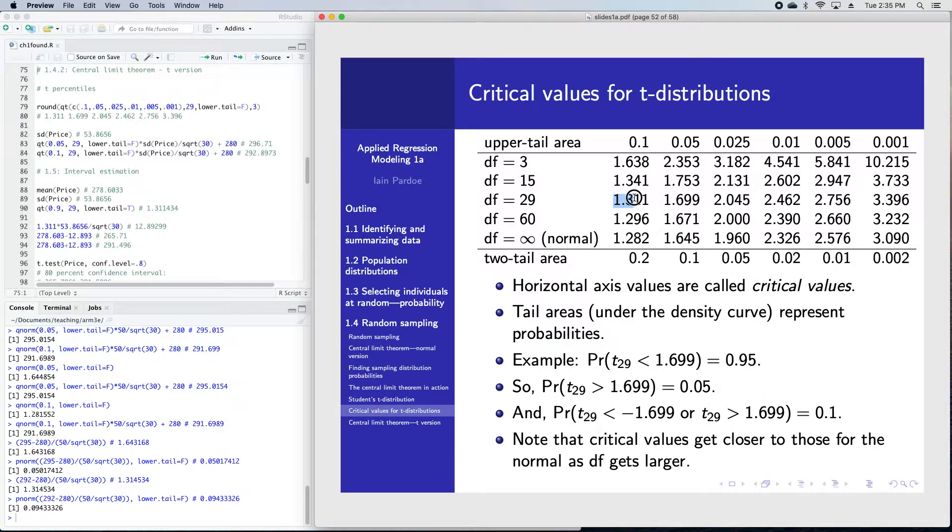So this 1.311 here, that's the value along the horizontal axis. If we were to draw a picture of a t-curve, we would have 1.311 along the axis. If we looked at the tail area to the right of 1.311, under the t-curve, that upper tail area would be 0.1.